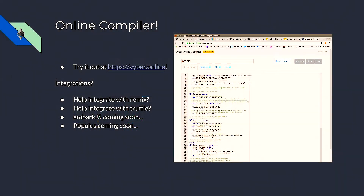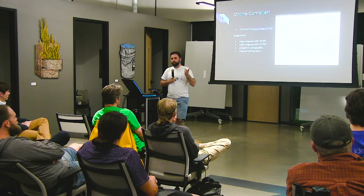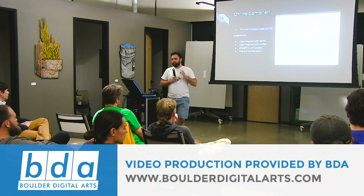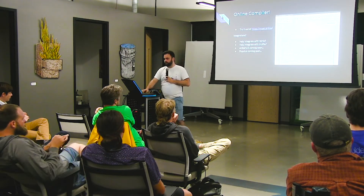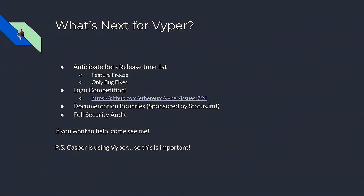If you want to give it a shot, we have viper.online where you can try it out. It will compile your contract into the bytecode and ABI you need. You'll have to take that into a tool like Web3.py to actually deploy it. We're still working on something with enough functionality to work like Remix where you can compile, deploy, and play with it in place. If anyone wants to help integrate that with Remix or Truffle, we're obviously looking for help. Embark.js has offered to include it, and Populous is something we want to support in the future. We're in a feature freeze right now and only accepting bug fixes, so go to the repo, give it a shot, and let us know what doesn't make sense.